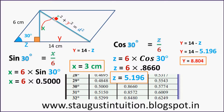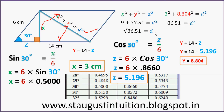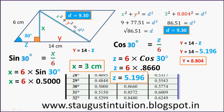So y is equal to 8.804. Now applying the Pythagorean theorem: x² + y² = d². That is 3² plus 8.804² = 9 + 77.51 = 86.51. Taking the square root, d = 9.30. So the answer for the first diagonal is 9.30 cm.